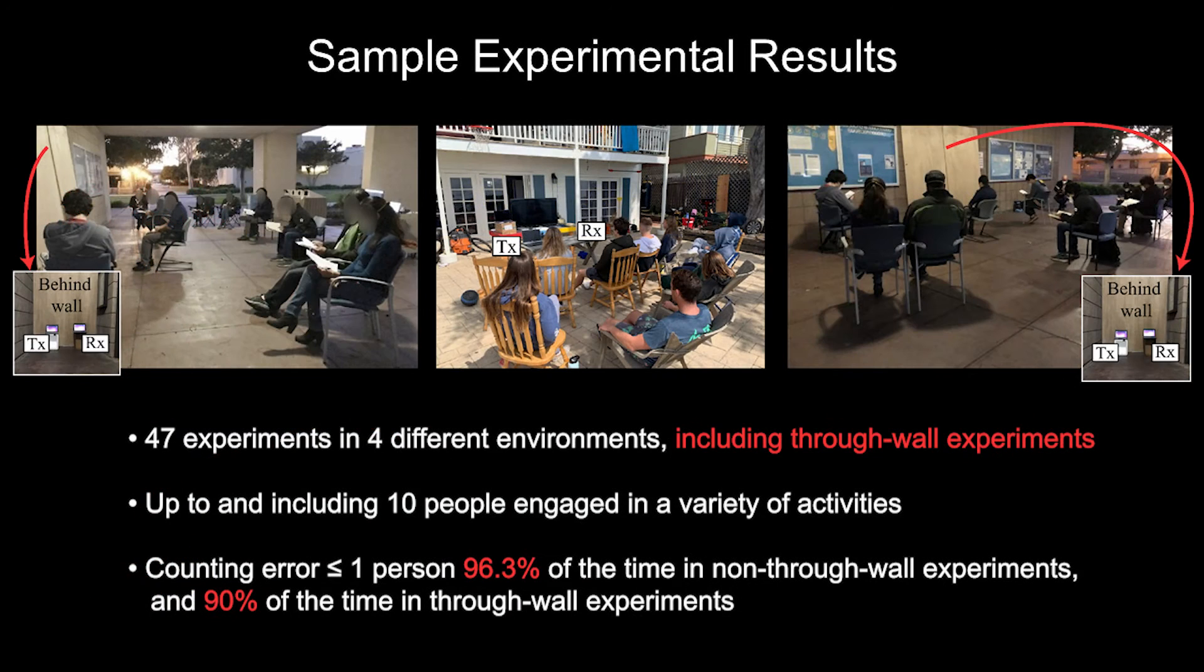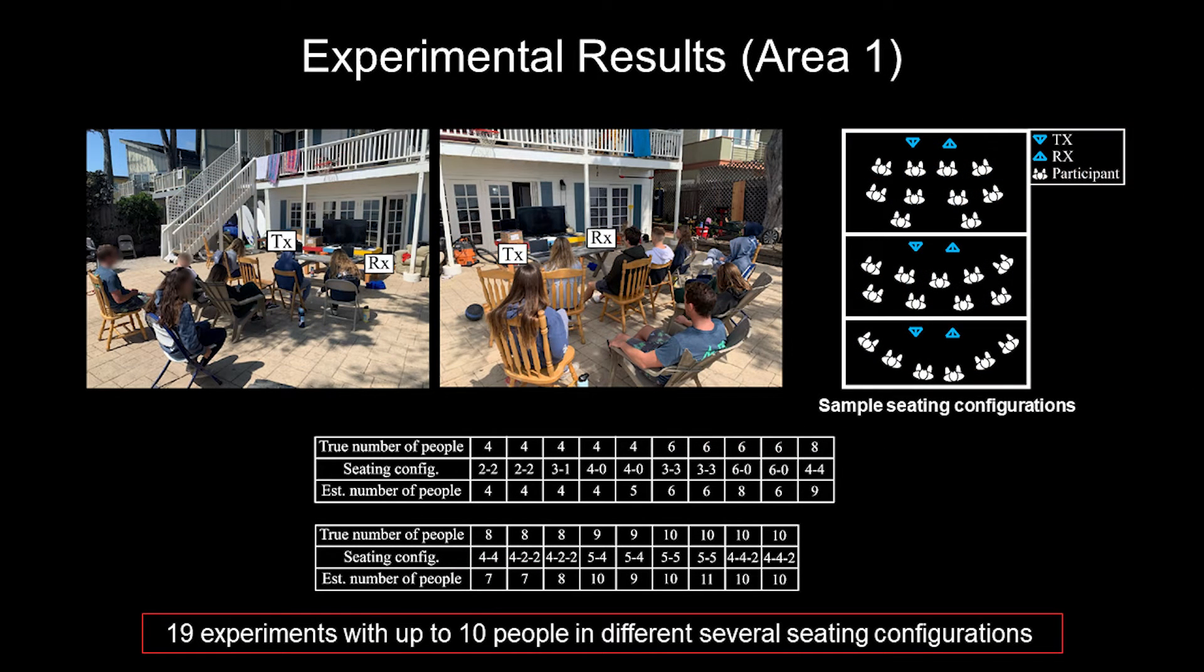We extensively tested our approach with 47 experiments where up to 10 people are engaged in different activities. For instance, in this patio area, we ran 19 experiments where up to and including 10 people sat down in rows of chairs together to watch a movie while the WiFi link collected WiFi measurements.